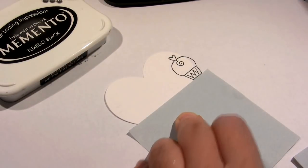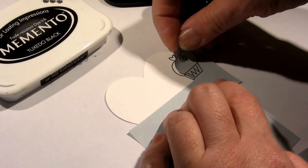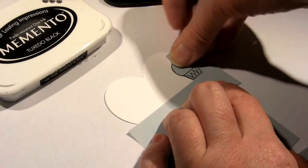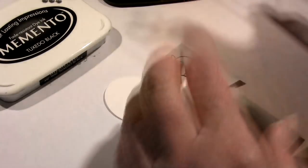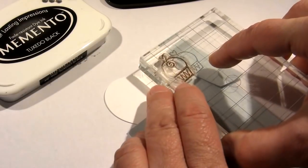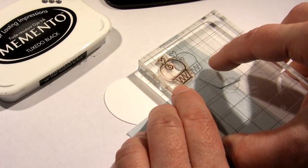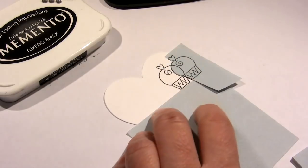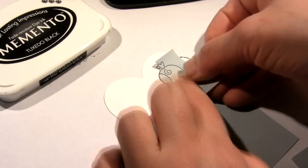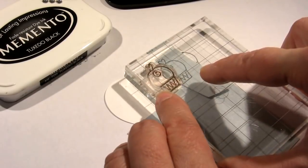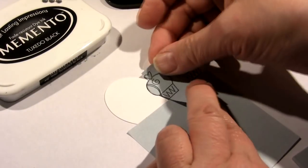We're starting by stamping the truffles onto a piece of Neenah cardstock that's already been cut into a heart shape using the heart die from the hearts and spoons set. I'm doing this so I can lay out my scene, my little truffle line, on the heart in the way that I want them.